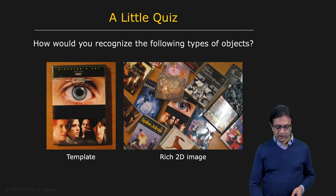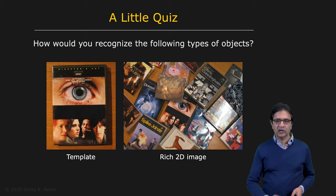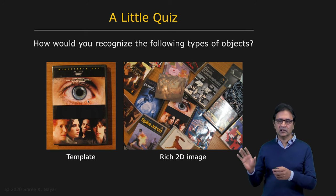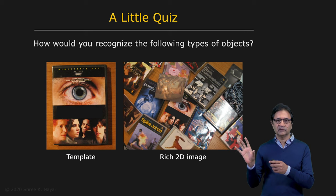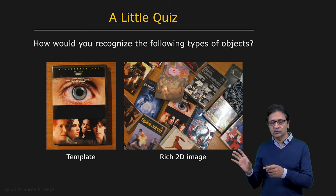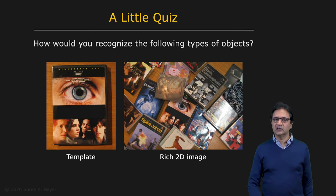But actually the harder problem here is occlusion. You can see that this object is actually obstructed by other objects — this is hard. Dealing with that using template matching might require you to create a lot of little templates from this object, apply each one, and make sure that in your final output enough templates appear in a certain geometric configuration. If they do, then you declare that you have found the object — a very computationally intensive process that doesn't scale very well.